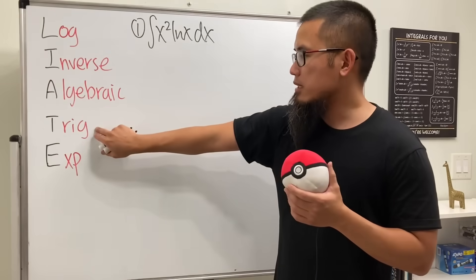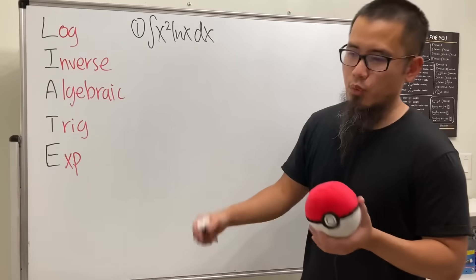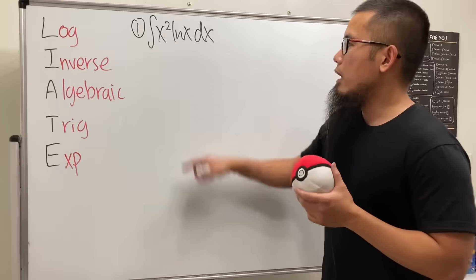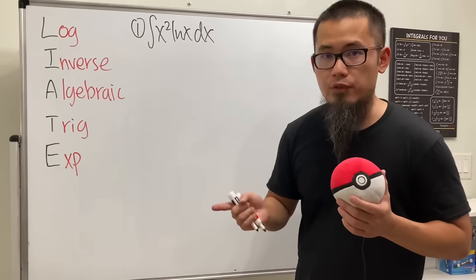And then next is algebraic, such as x to some power. And then next is sine cosine for the trig functions. And lastly, we have the exponential functions, of course, e to the x and things like that. And as we can see, we see log right away. So we'll choose that to be differentiated.